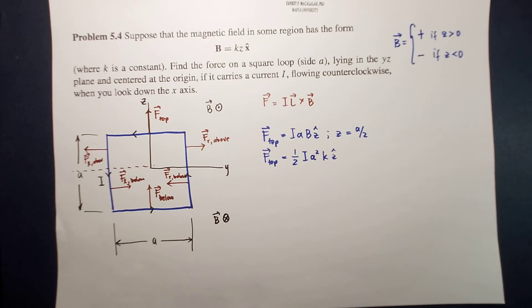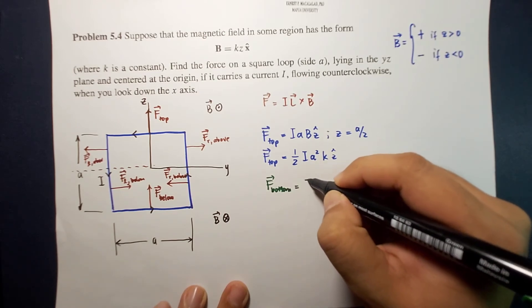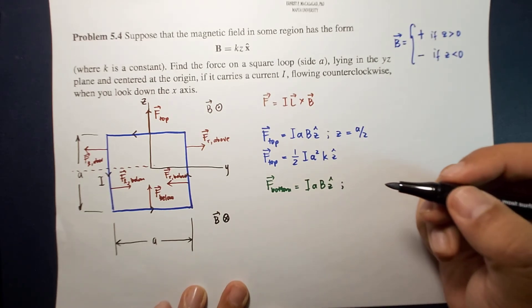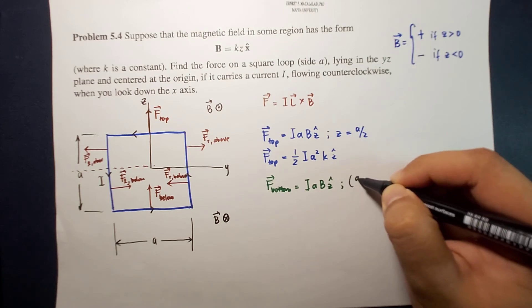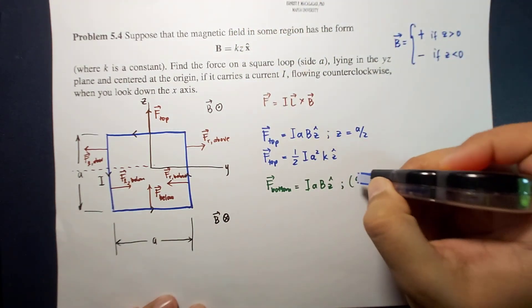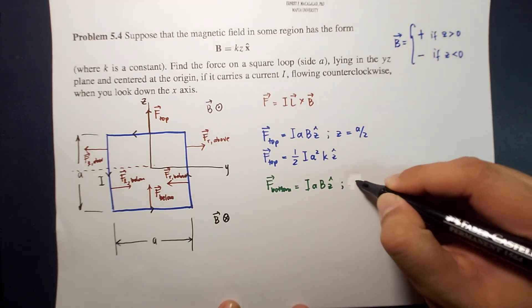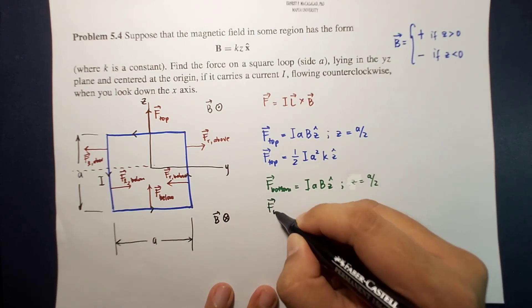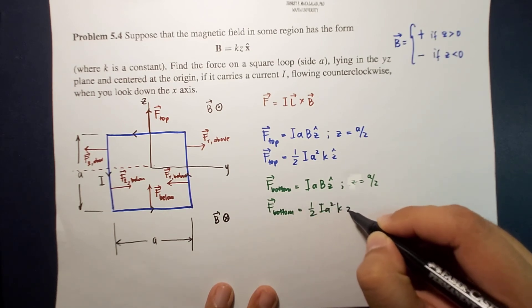For the bottom, we do a similar calculation. F bottom is equal to I a B z-hat. And again, the length of your z is a over two. So therefore F bottom is equal to one half I a squared k z-hat.